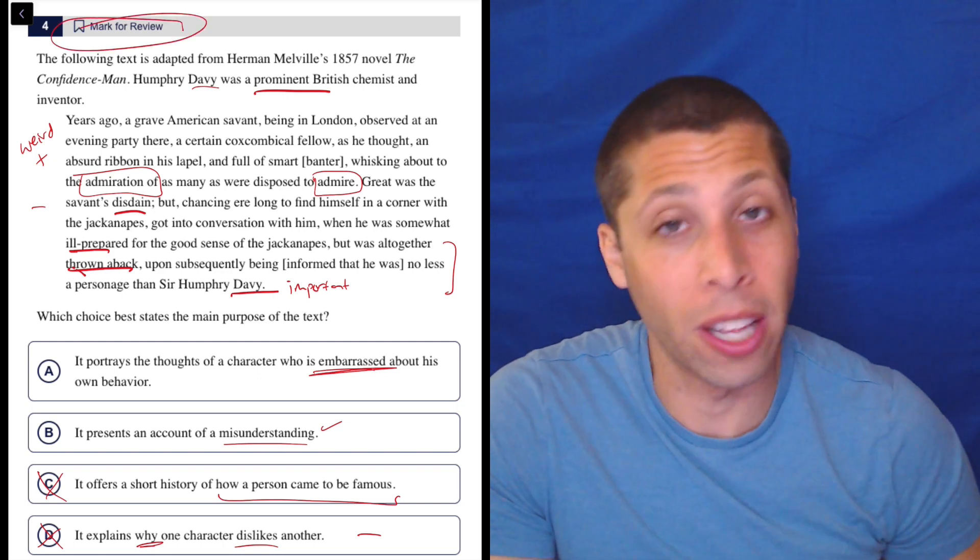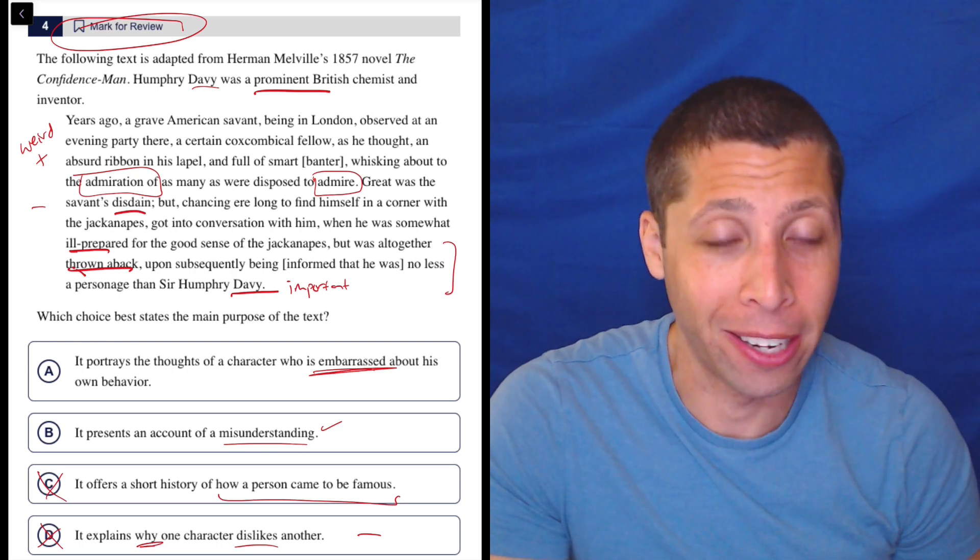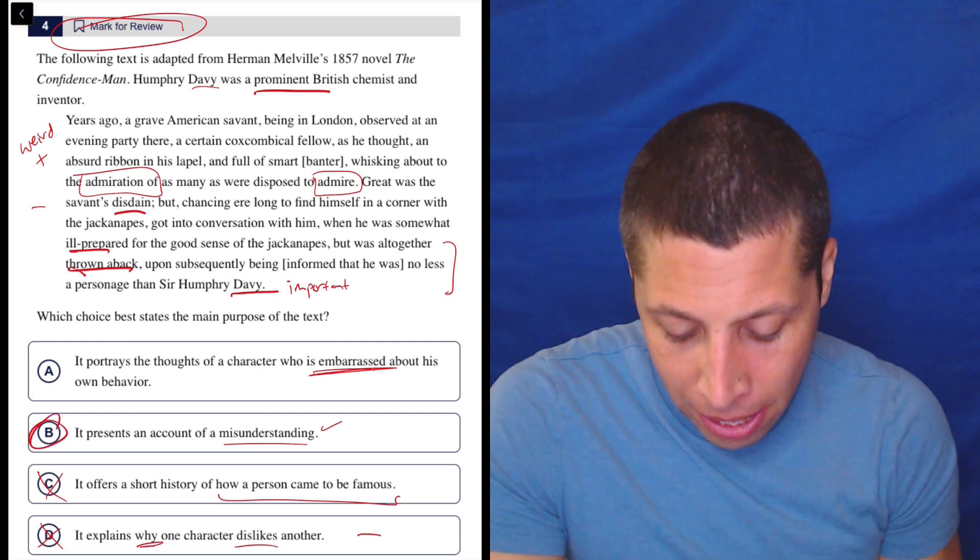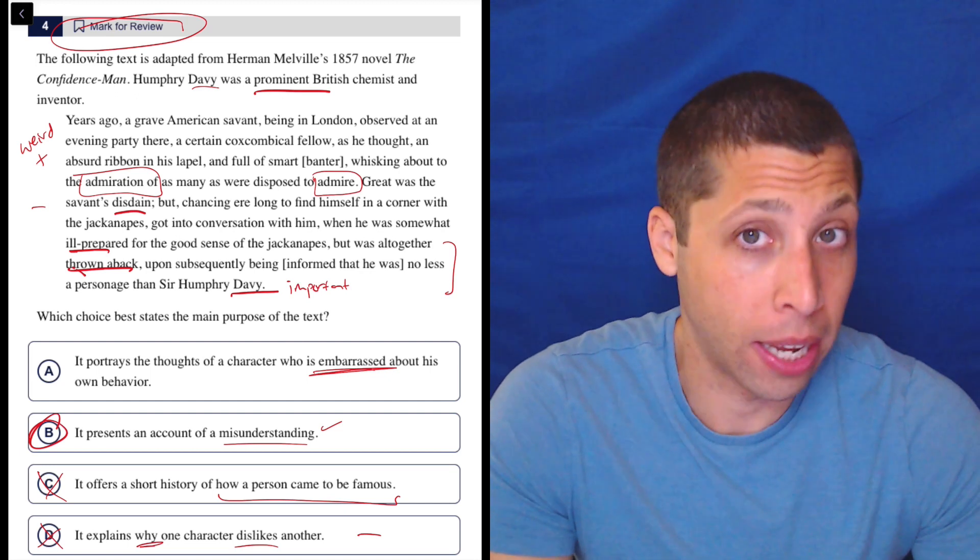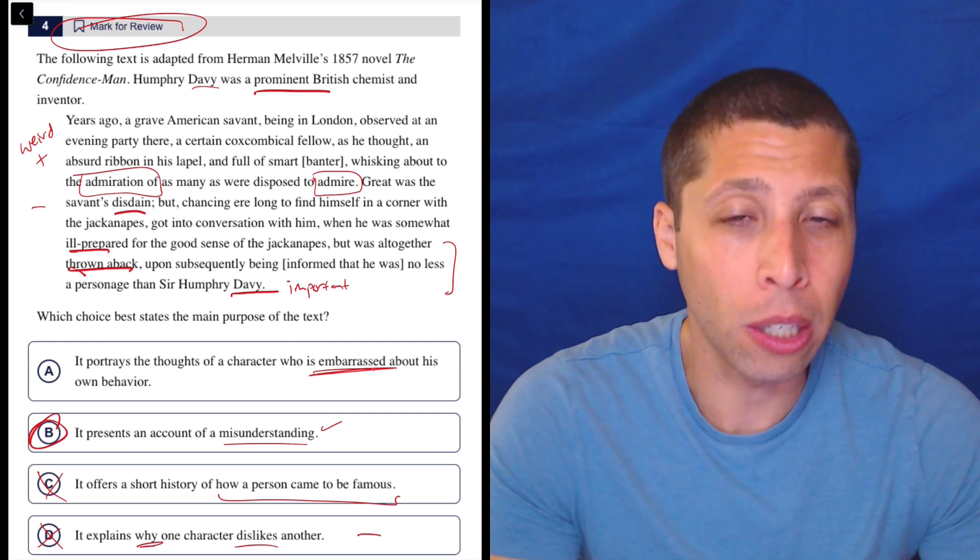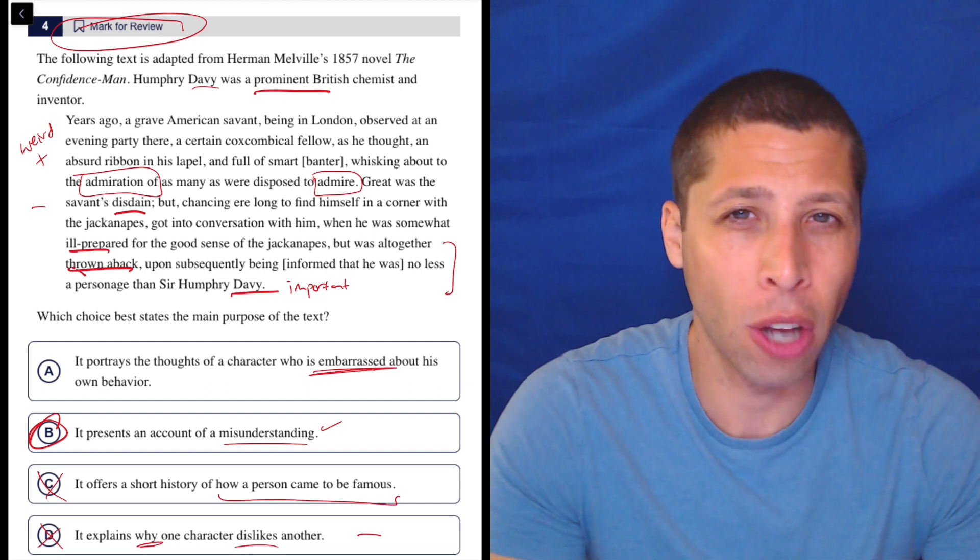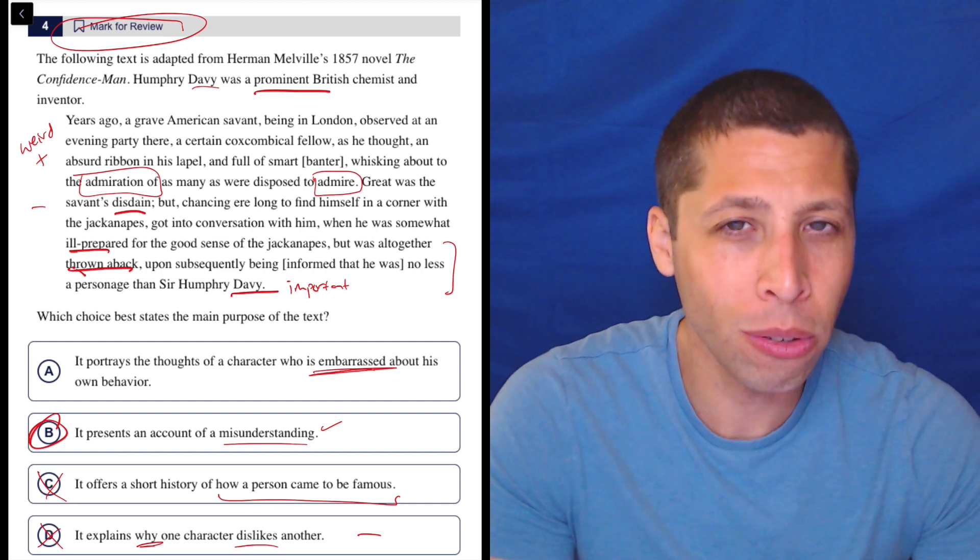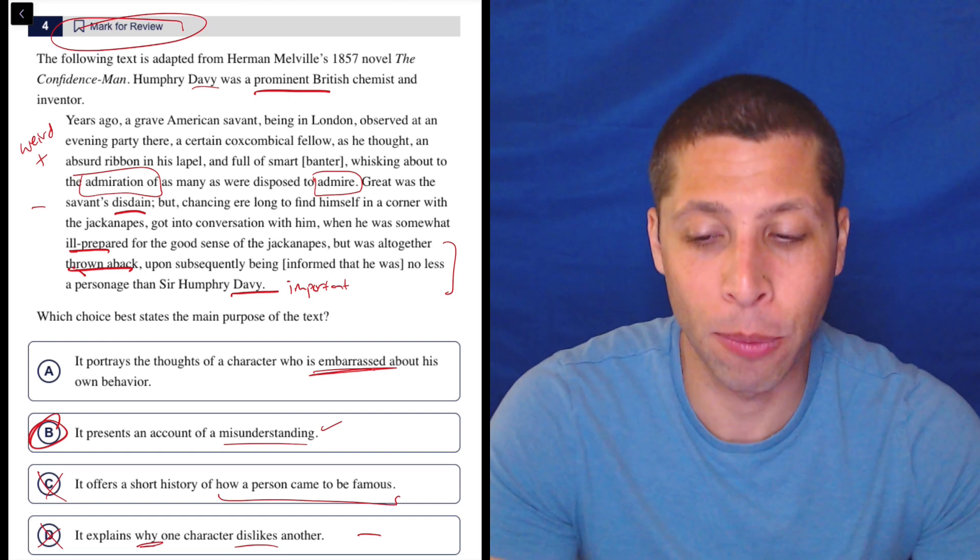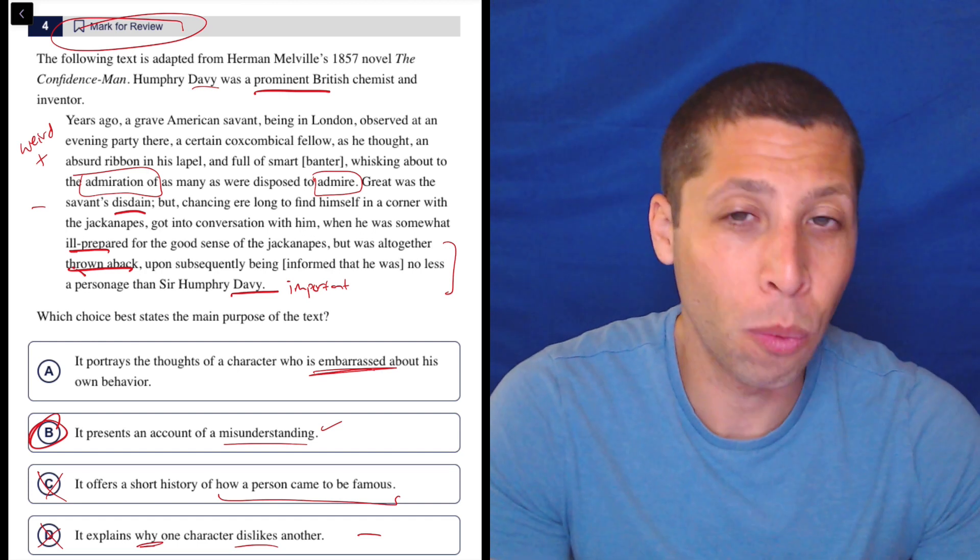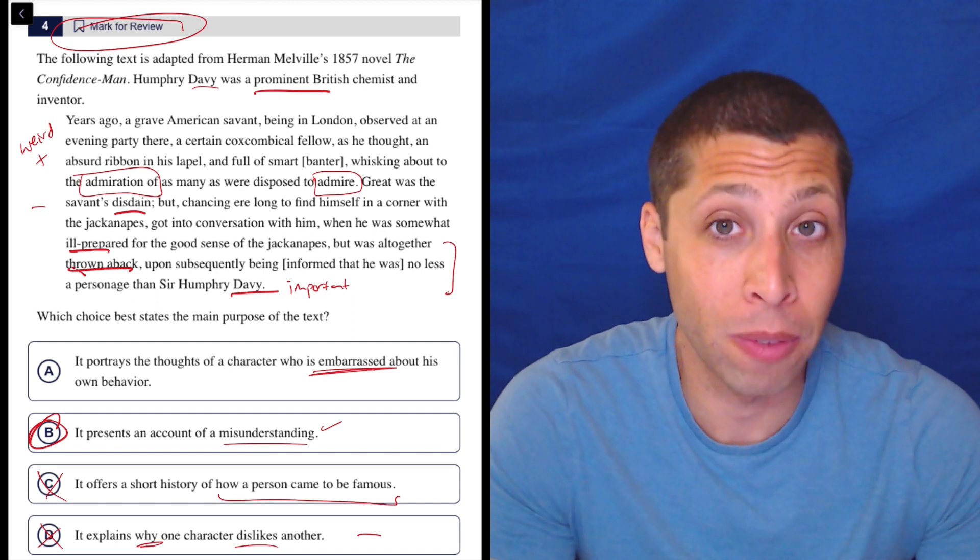This would definitely be a question that when I pick my answer, I'm not happy about it and I'm coming back. But the answer is B, because of kind of what I said, right? Embarrassed, we can force it in. It's reasonable to conclude that someone is embarrassed when they are talking to someone that they should have known but don't. But we don't actually get that word. We don't get a word for embarrassment and we are left to assume it.